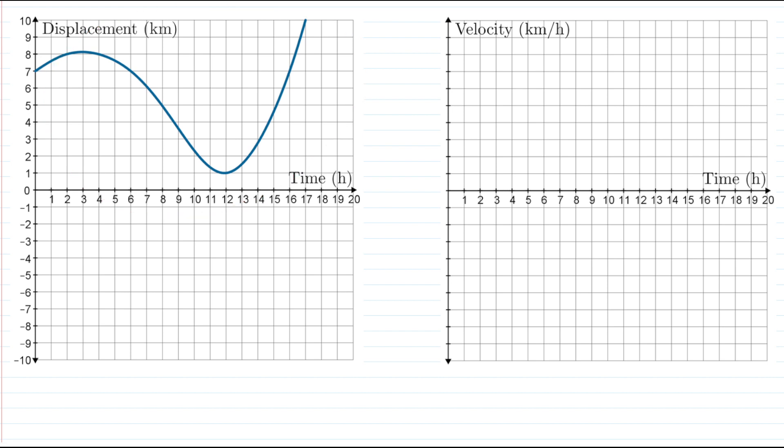Well when our displacement time graph consists of a bunch of straight lines all we need to do is find the slopes of those straight lines and those slopes become the y values or the velocity values on our velocity time graph.